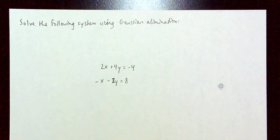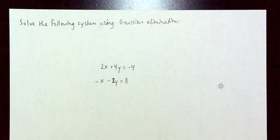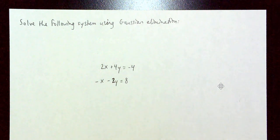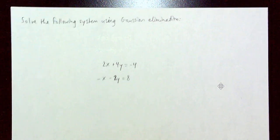So first up, a nice simple problem to start off with — a system of two linear equations and two variables. We're going to solve the system using Gaussian elimination. The first thing we always do is set up the augmented matrix.